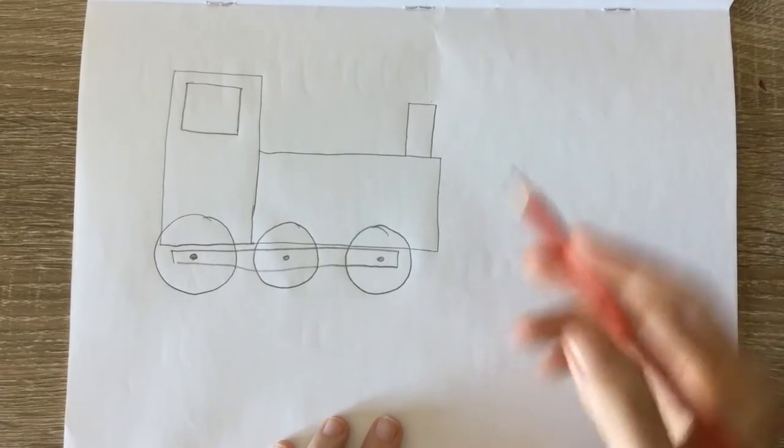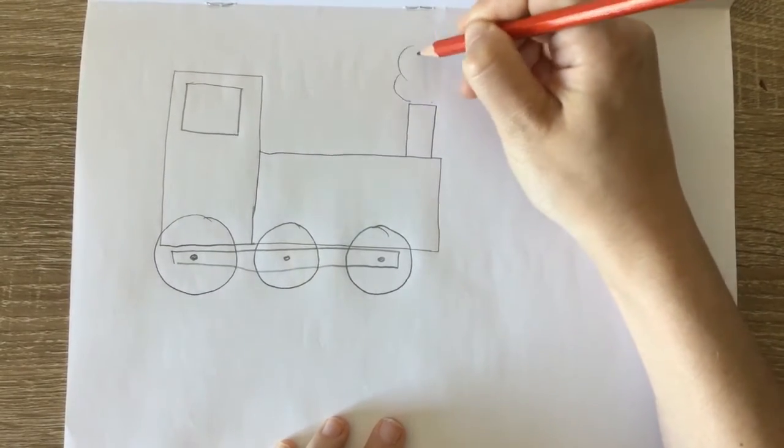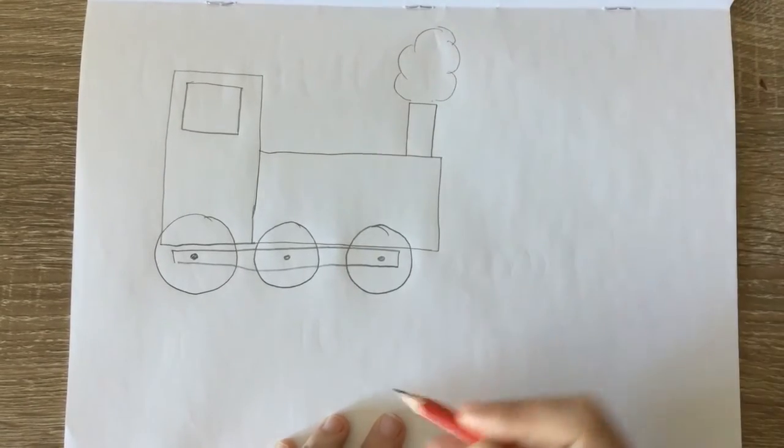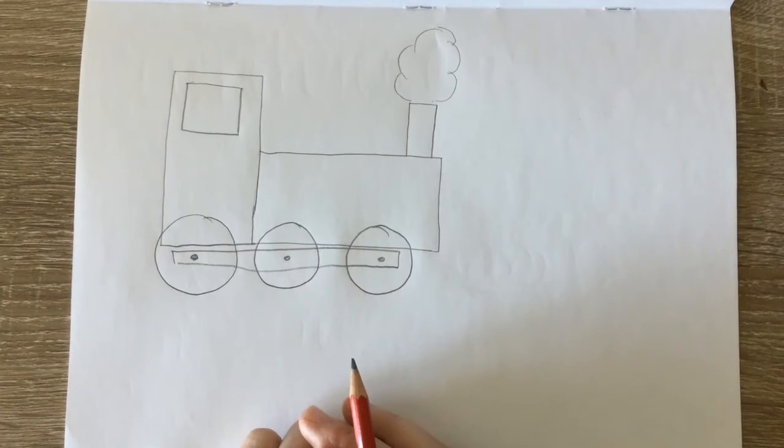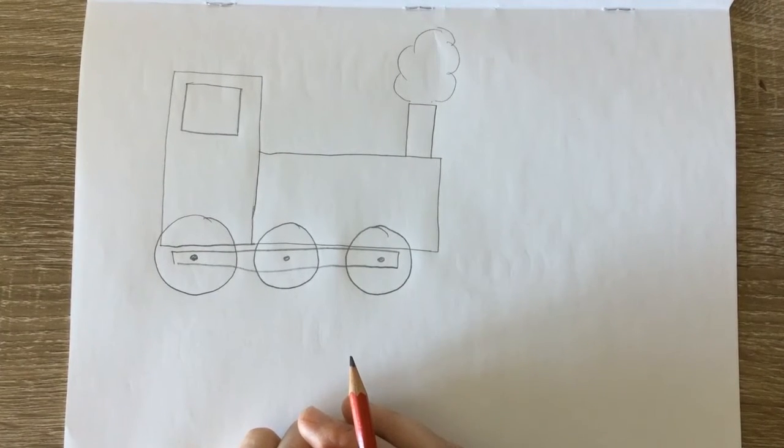So I've got my train. You can always draw some smoke coming out of the steam stack. There. What other things could we draw made out of shapes?